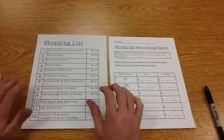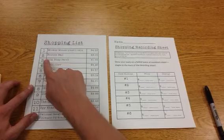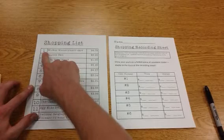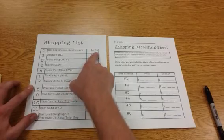The first thing we want to look at, and we're going to do this one together, is you've got your shopping list here. You notice that each item is numbered. Item number one is the Mickey Mouse Plastic Ears, and they cost $4.39.